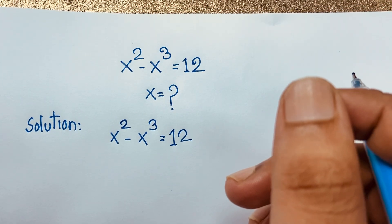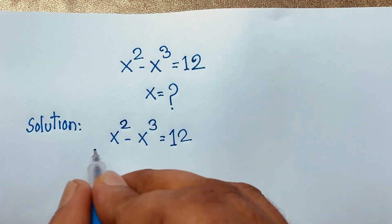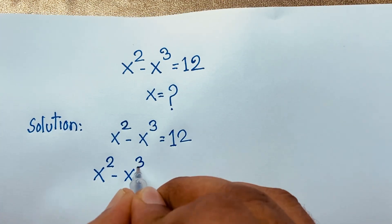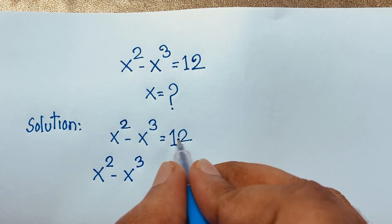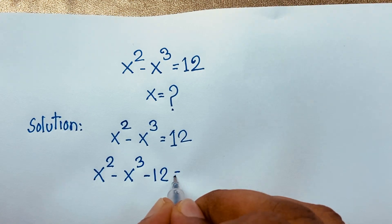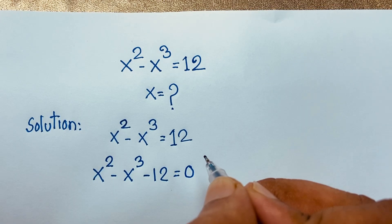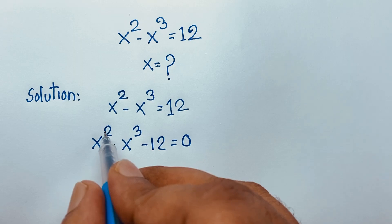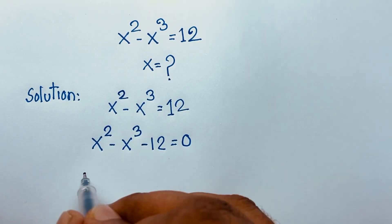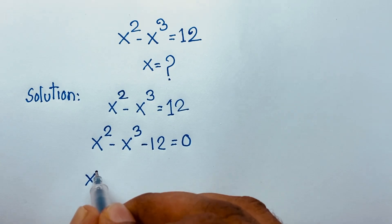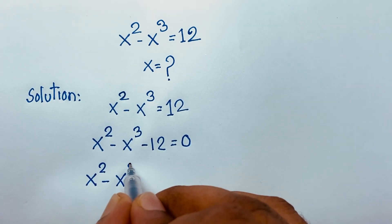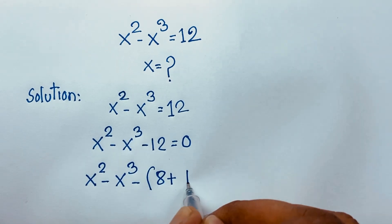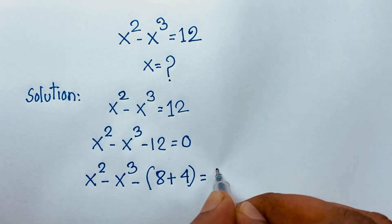Now I can see this exponential equation: x to the power 2 minus x cubed. If I move this 12 to this side, it will be negative 12, equal to 0. So we have x squared minus x cubed, and this negative 12 can be written as negative 8 plus negative 4, equal to 0.